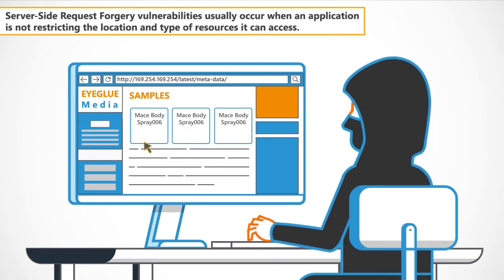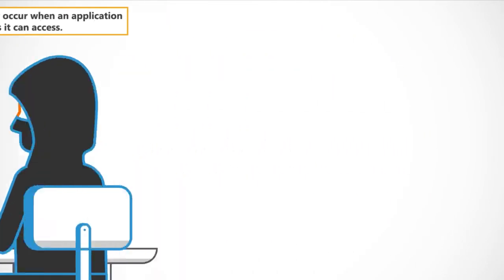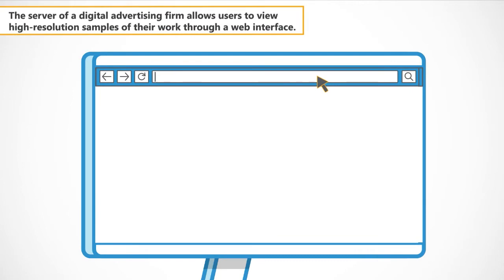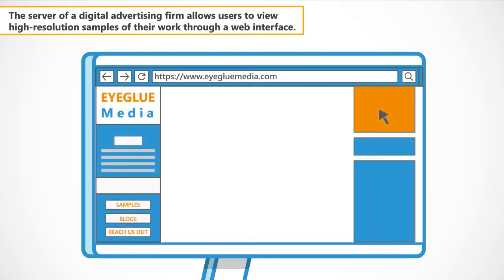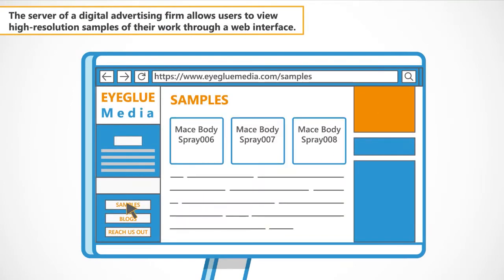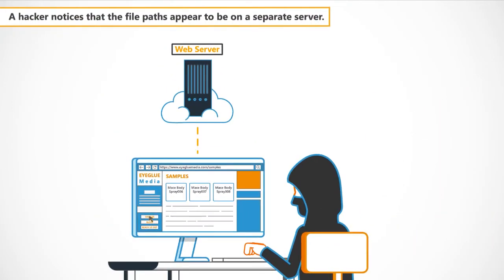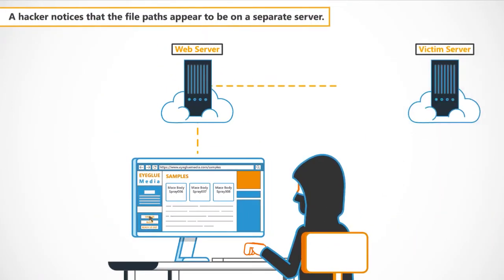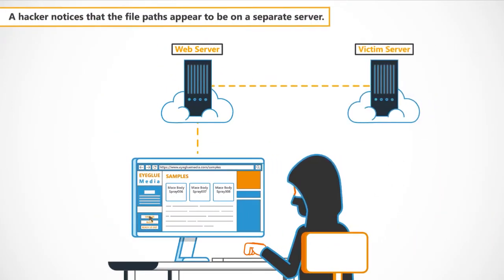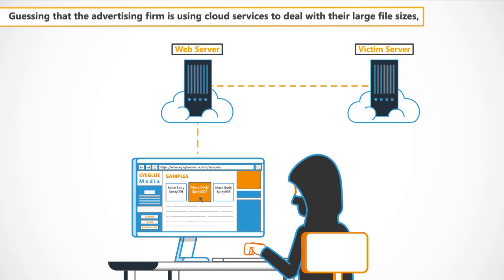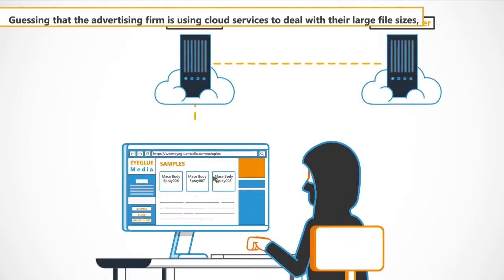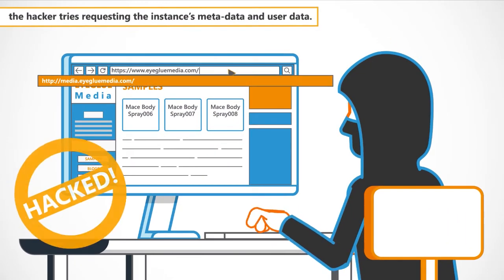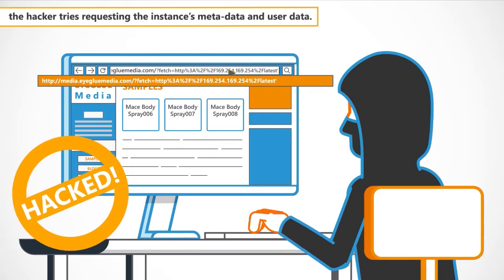To understand server-side request forgery attacks, let's look at an example. The server of a digital advertising firm allows users to view high-resolution samples of their work through a web interface. A hacker notices that the file paths appear to be on a separate server. Guessing that the advertising firm is using cloud services to deal with their large file sizes, the hacker tries requesting the instance's metadata and user data.